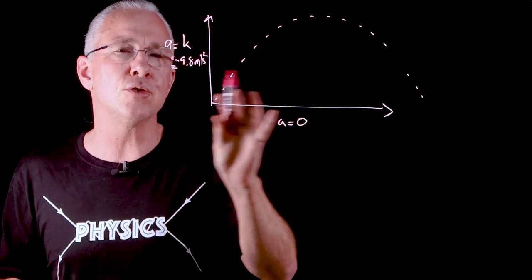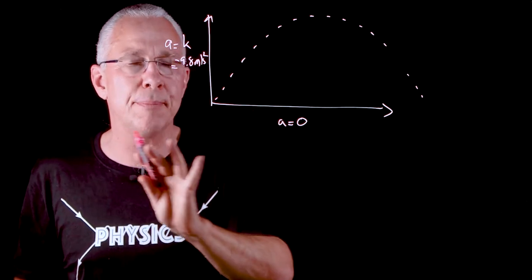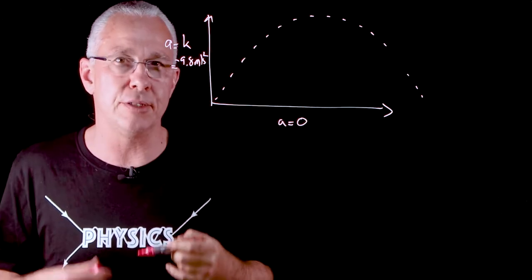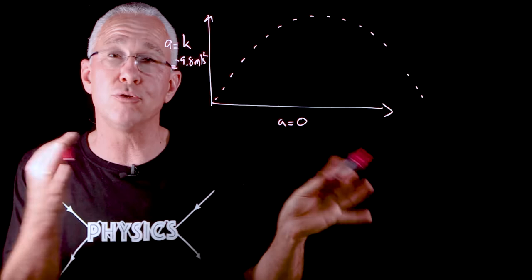Really critically important is that those two types of motions are independent of each other. What happens horizontally does not affect what happens vertically and so as a result you can break them up into two components.